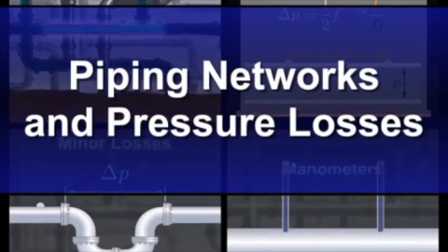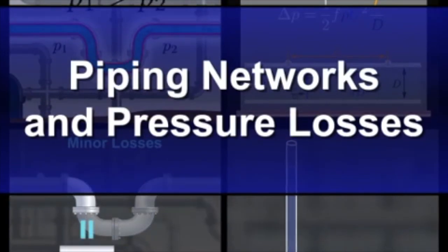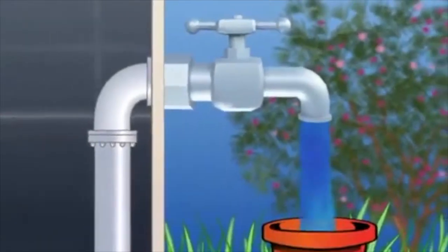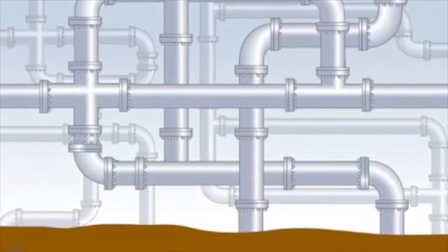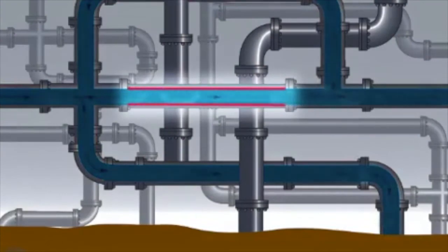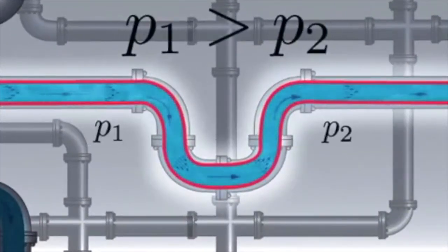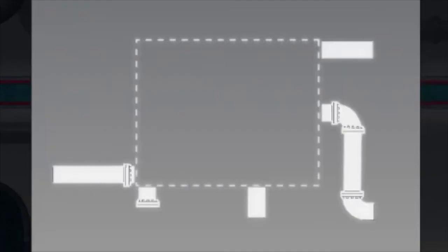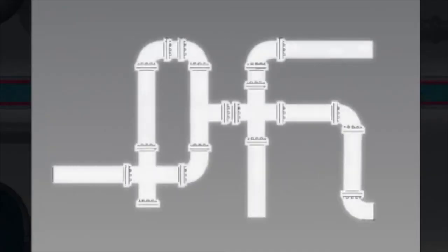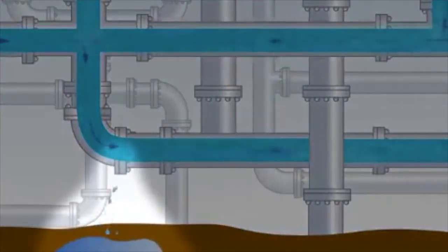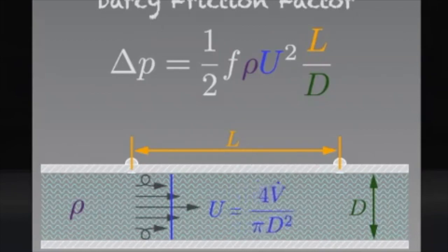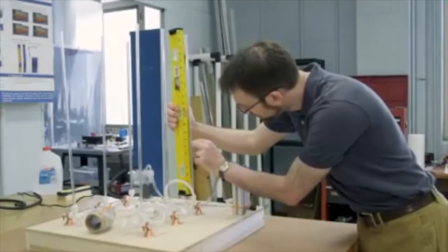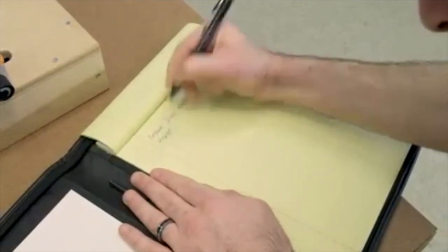Piping networks are commonly found in engineered and natural systems since they can efficiently transport, circulate, and distribute fluids. The water that comes out of the tap at your home travels through a complex city water supply system, which is an excellent example of an engineered piping network. As fluid circulates through a piping network, it encounters frictional resistance from the channel walls and fittings, and the fluid stream loses pressure as it overcomes these flow resistances. Characterizing and understanding these pressure losses is necessary to specify the correct components and sizes in a new design or to diagnose problems in an existing system.